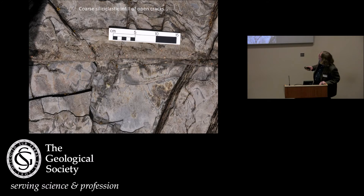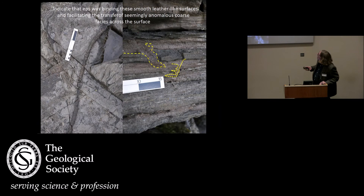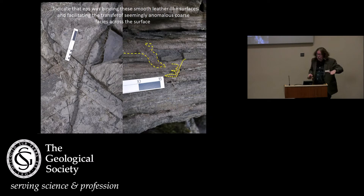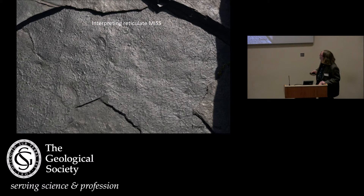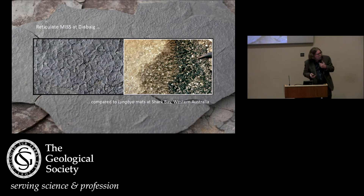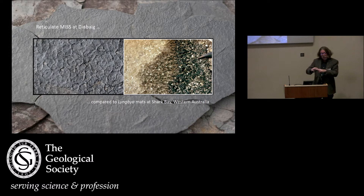Those cracks can be coarsely infilled as well. Here's a slide from Chris Baldwin showing that this coarse material comes in and fills the cracks. His comment is that it appears the finer grain surfaces are actually partially bound by microbial mats, and that allows the coarser grains to bypass that surface and be deposited. In terms of interpreting the reticulate mat surfaces, the classic way of looking at that is to look at the upper part of the surface — it reminds me very much of a Lyngbya mat from Shark Bay in West Australia.